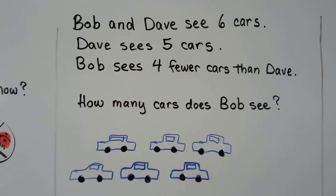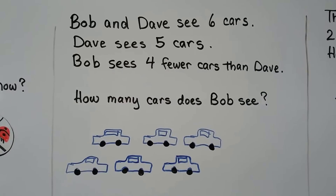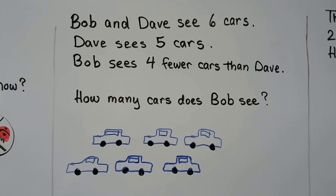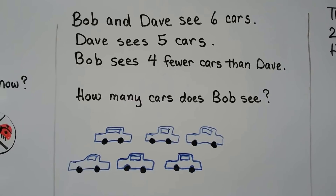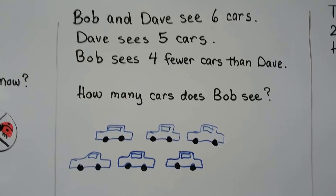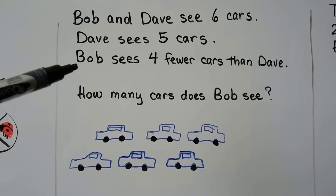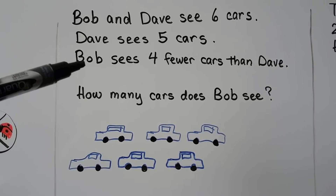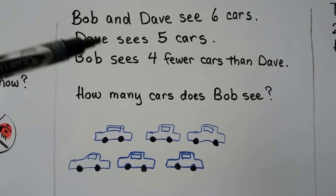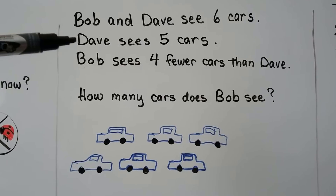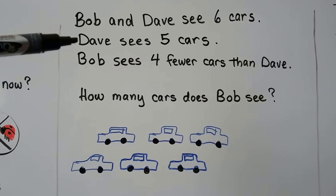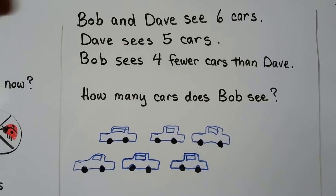Bob and Dave see six cars. Dave sees five cars. Bob sees four fewer cars than Dave. How many cars does Bob see? Well, it says Bob sees four fewer cars than Dave, so he doesn't see as many as Dave — Dave sees more. And it says Dave sees five cars. There are six cars total.